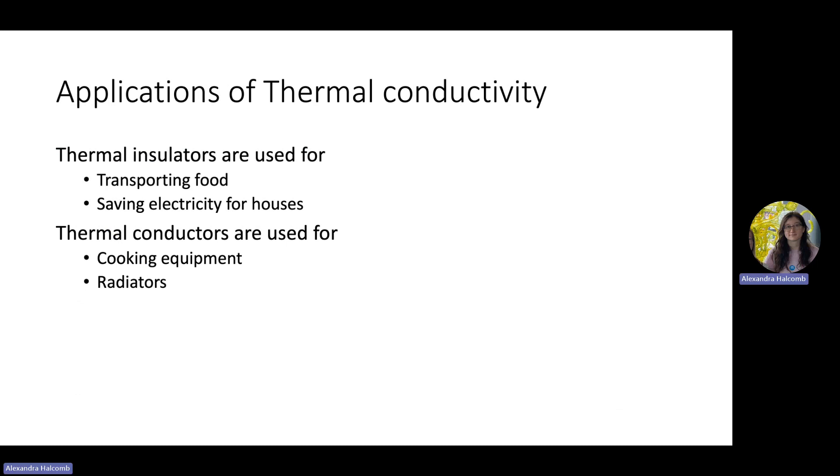So the applications to thermal conductivity. Knowing the thermal conductivity of objects means that if you have an insulator, you could use it for transporting food, keeping it at a cold or warm temperature, and saving electricity for houses. As you heat or cool your houses, it keeps your house at the same temperature and reduces the need for air conditioning or heating that you would need otherwise if your house was losing or gaining energy from outside.